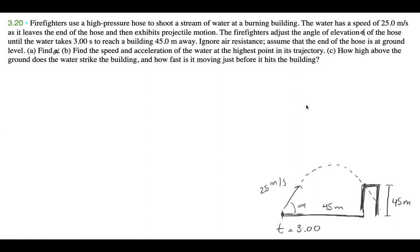Part B asks us to find the speed and acceleration of the water at the highest point in its trajectory. Part C asks how high above the ground the water strikes the building. Before doing any of that, I'm going to write down all of our knowns, because we're asked for so many different things — it's really helpful to organize what we know and what we don't know. For Y: